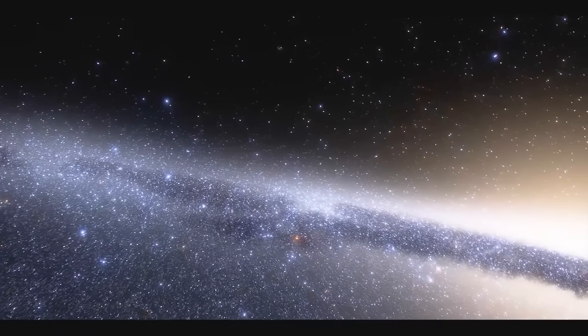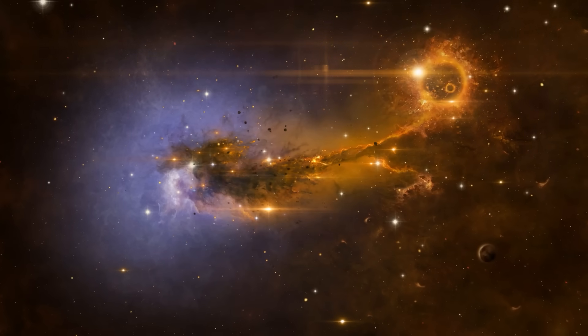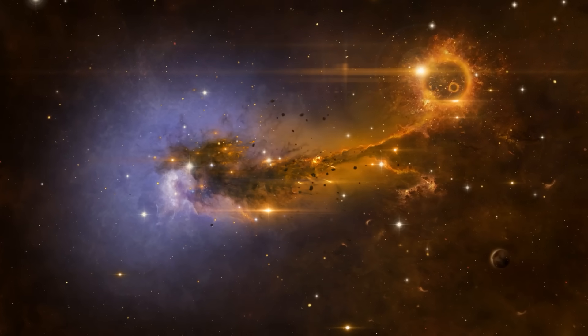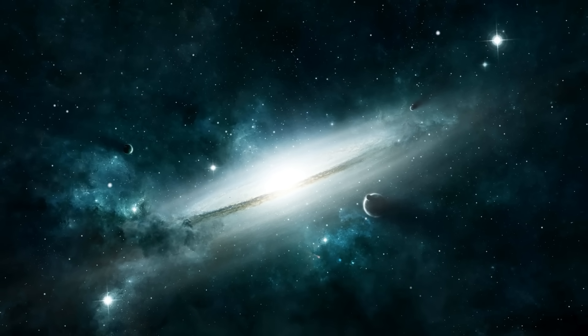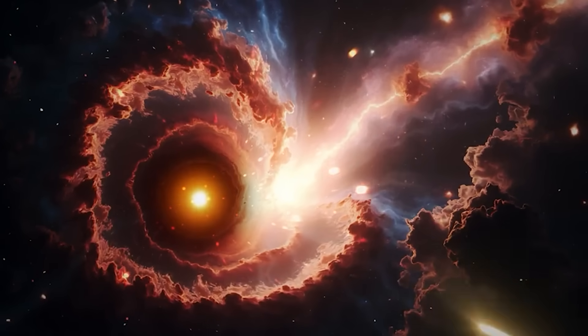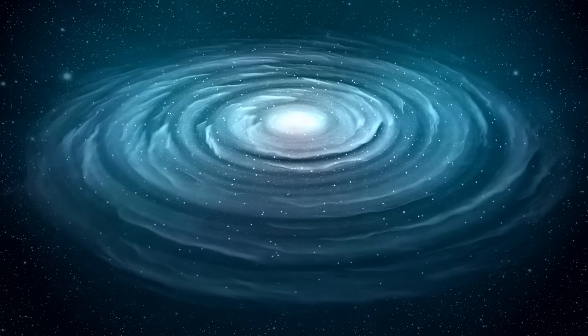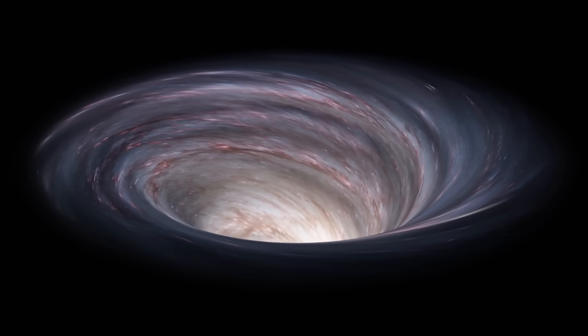The region was mapped again, and the image Webb returned was beyond comprehension. An object the size of an entire galaxy, but radiating energy with the spectrum of a single star. It was as if the laws of scale had been inverted. Something enormous was shining like something small. At first glance, the object appeared spherical, like a galaxy cluster compressed into a single point. But when analyzed in infrared, it showed internal motion: thousands of spiral structures moving independently within, orbiting a dark center that absorbed nearly all visible light. It wasn't a galaxy. It wasn't even matter as we know it.